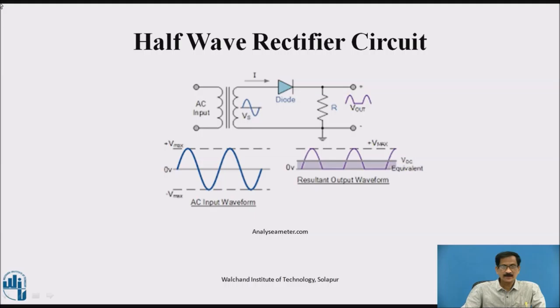When the top secondary of the transformer is at positive potential, diode will be forward biased since its anode is positive with respect to cathode. Current will flow through the diode and through the load resistance RL, and we are getting the output voltage at the output side. We are getting a positive half cycle corresponding to the AC input positive half cycle.